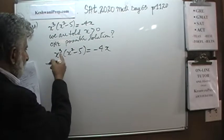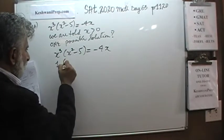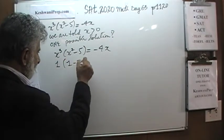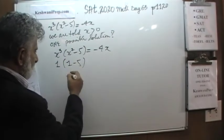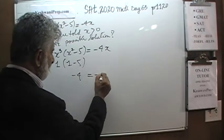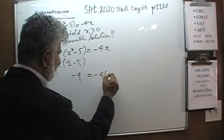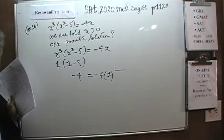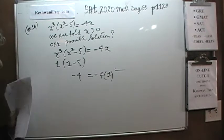So if you put in 1 here: 1 cubed is just 1, 1 squared is just 1, and 1 minus 5 is negative 4. On this side we have negative 4 times 1. There you go — it works. 1 would work.